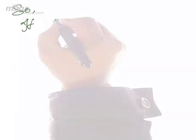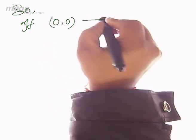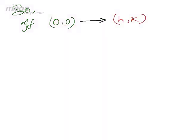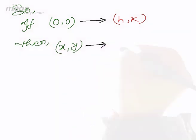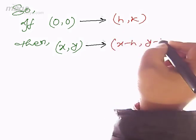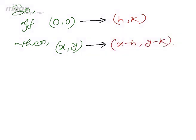So if origin (0,0) is shifted to (H,K), then the coordinate (X,Y) becomes (X minus H, Y minus K). Now I'm taking an example to clarify this concept.